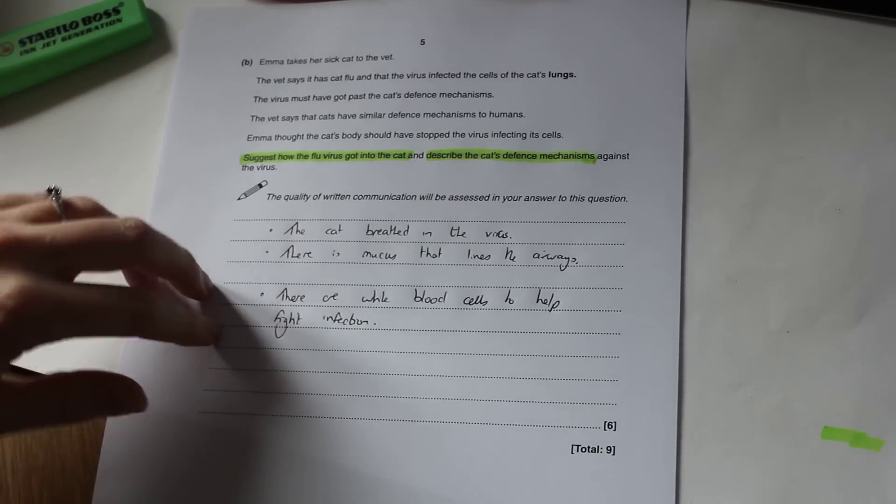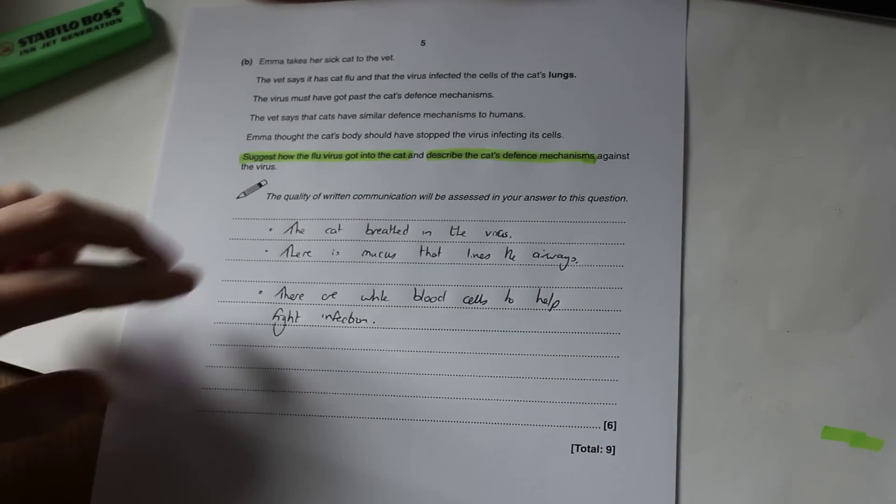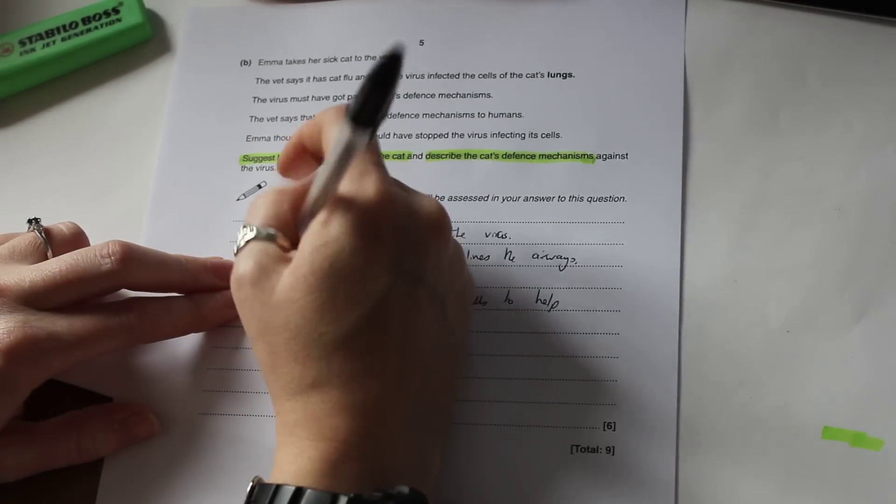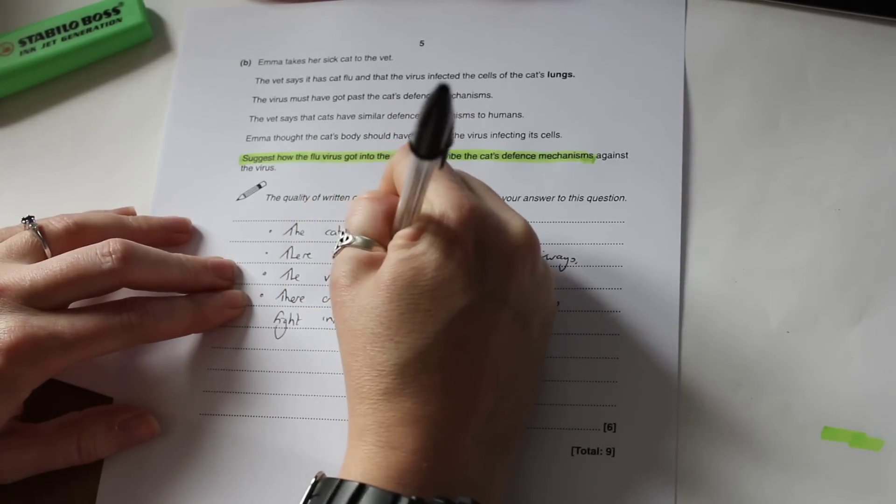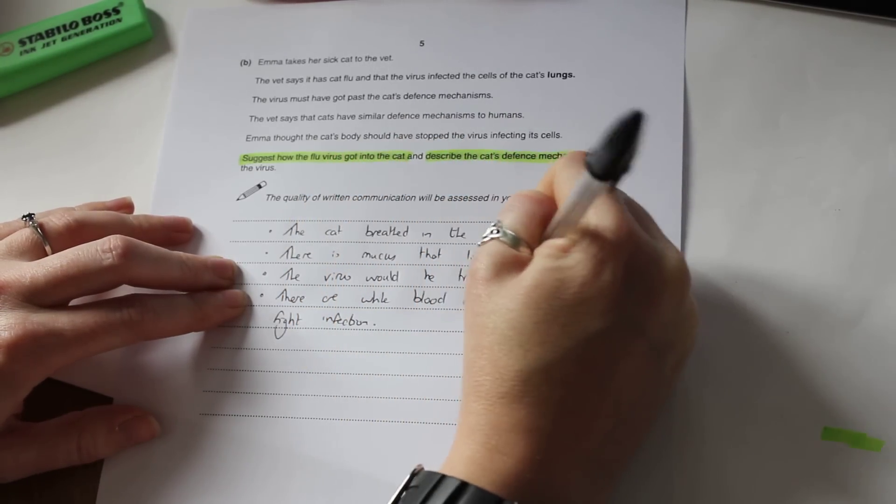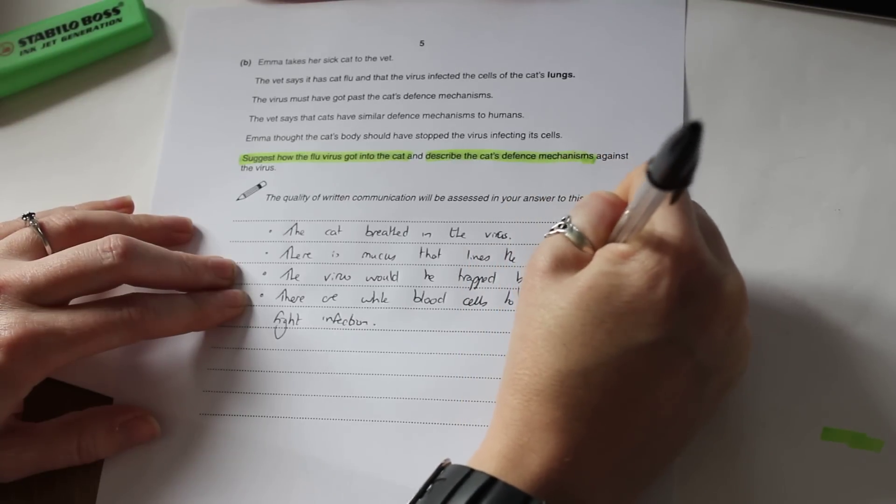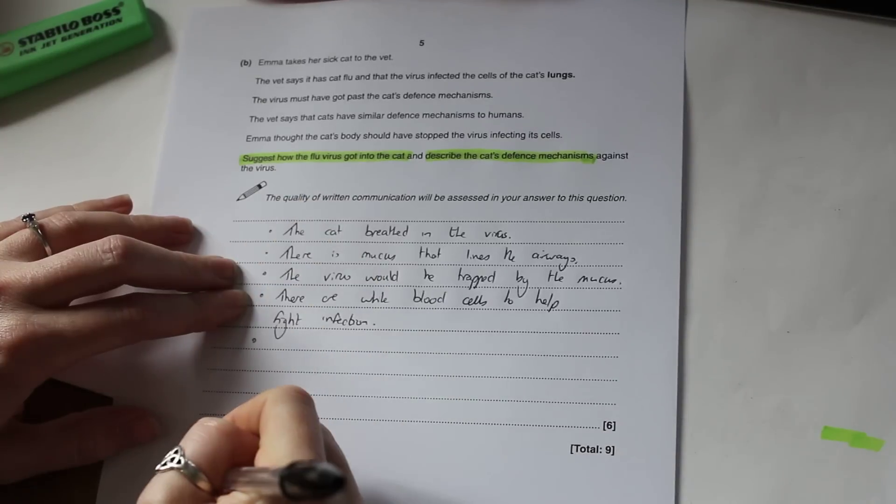So the last thing we've got to do then is just add a bit of detail to these. So we just need to say how the mucus actually prevents this infection. So once we've got that lining the airways the virus would be trapped. By the mucus. So we've explained that one. And then we do the same for the white blood cells here.